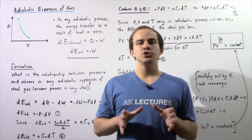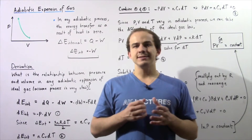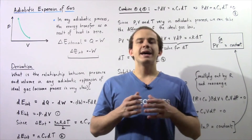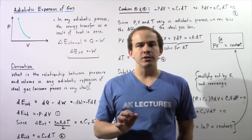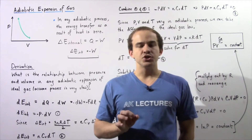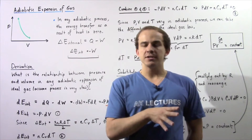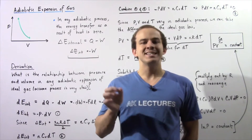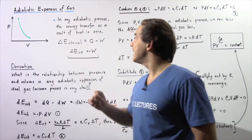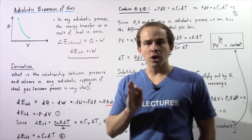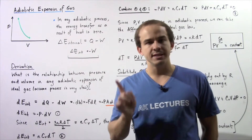Let us continue our discussion of adiabatic processes. An adiabatic process is a process in which there is no change in energy as a result of heat. No energy flows into our system or out of our system as a result of a difference in temperature between the system and the surroundings. In any adiabatic process, the energy transfer as a result of heat is assumed to be zero.